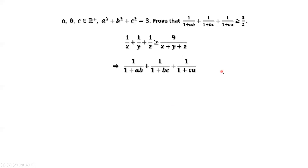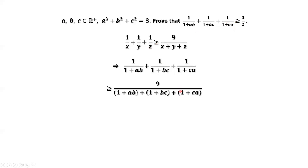This is the result we are going to use to solve this inequality. Now, how to apply this inequality result to our question? We consider the first denominator as x, the second denominator as y, and the third denominator as z. Therefore, we have this result, which is bigger than or equal to 9 over (1 plus AB) plus (1 plus BC) plus (1 plus CA). Continuing to simplify, this is 9 over (3 plus AB plus BC plus CA).